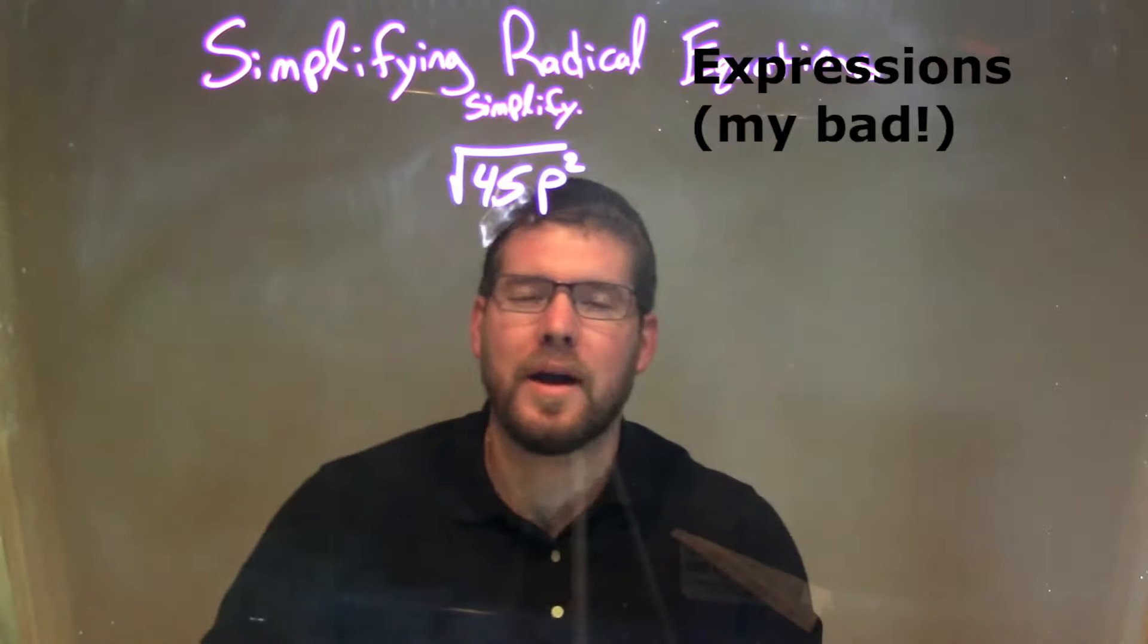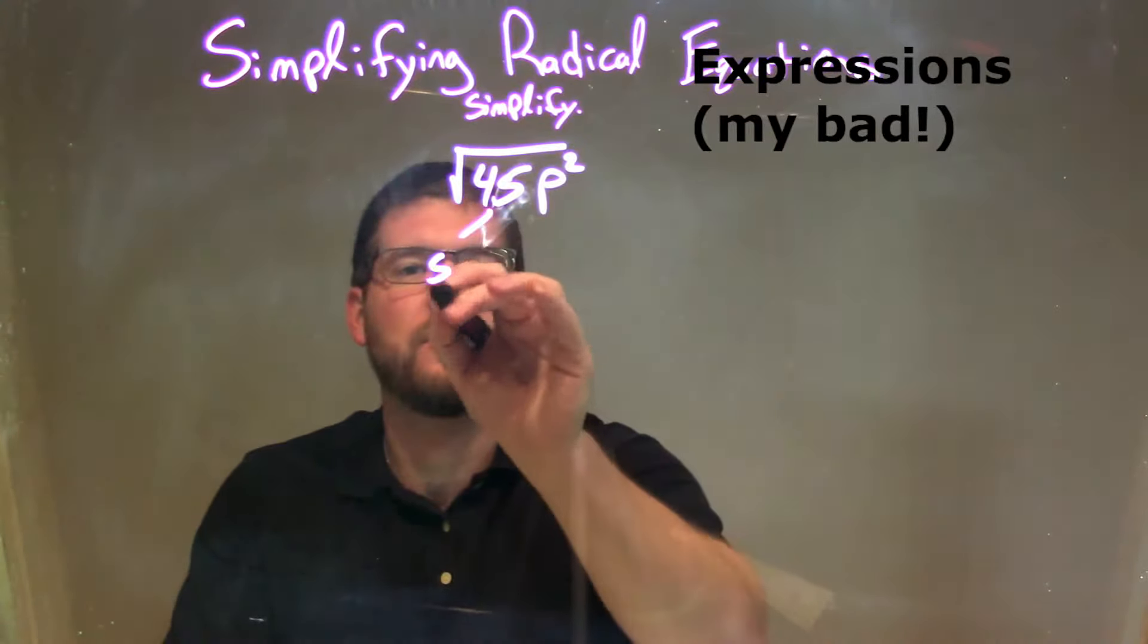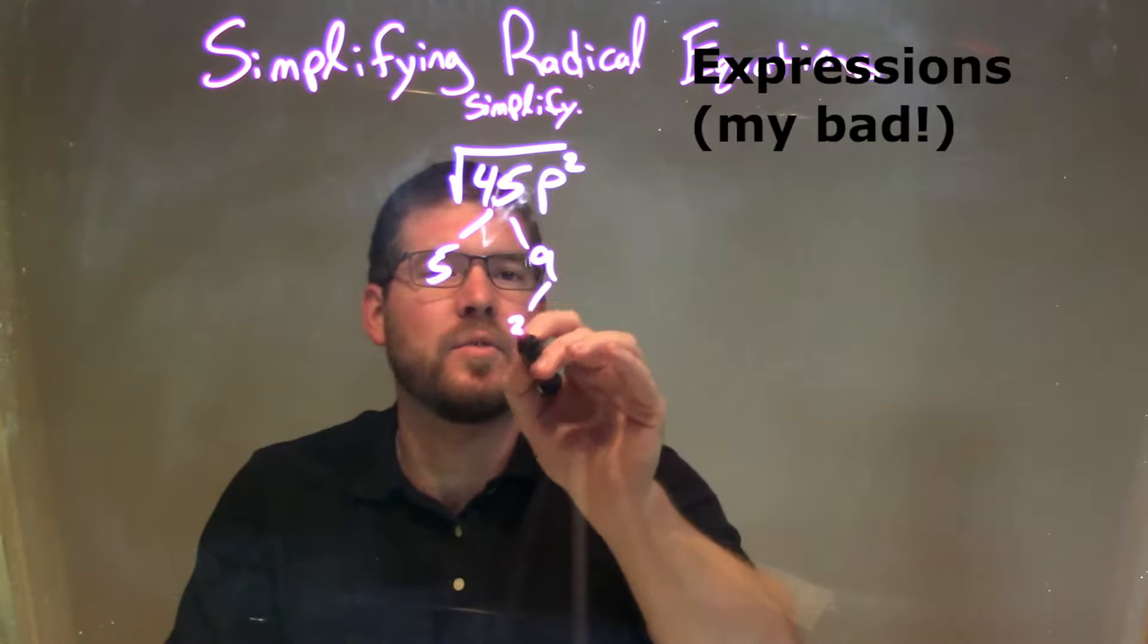Well, 45p squared, I want to do my prime factorization on that. So 45 is just 5 times 9, and 9 is 3 times 3.